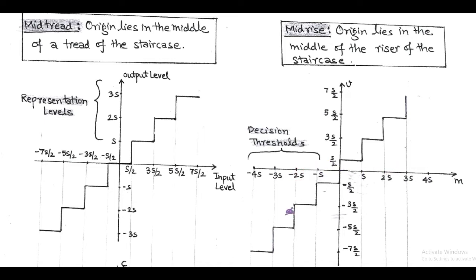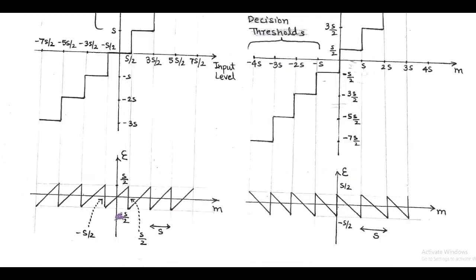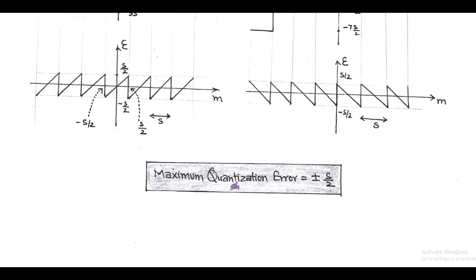In both cases, quantization error versus input level is characterized by a sawtooth wave. In mid-tread, we have a ramp signal with positive unit slope, and in mid-rise there is negative unit slope. Accordingly, maximum quantization error is equal to ±S/2.